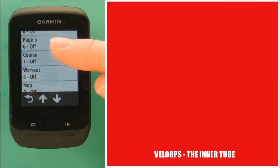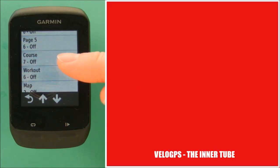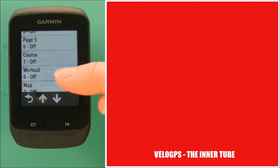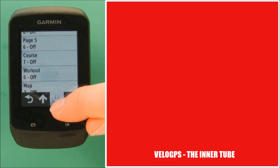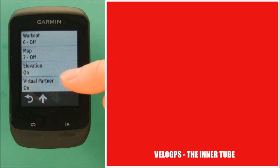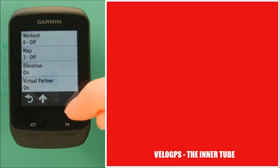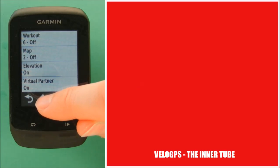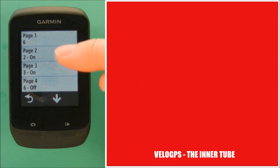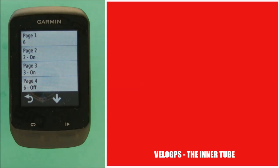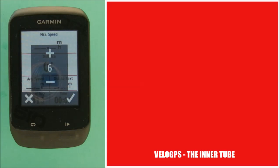You'll see here page number five as well as some additional pages covering course, workout, map, elevation, and virtual partner. We're going to show you those in a little bit, but for now we're just going to show you how to set up page number one.